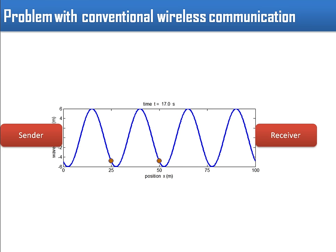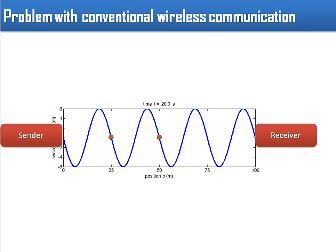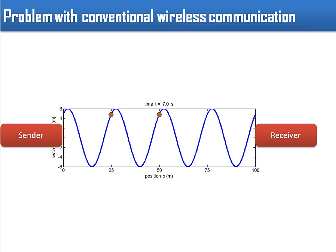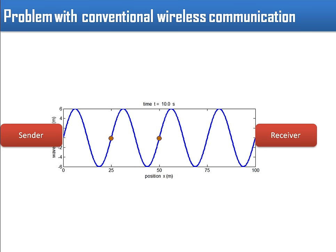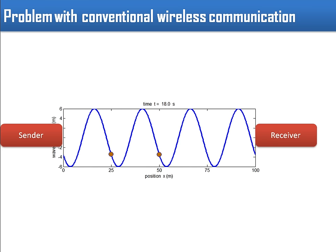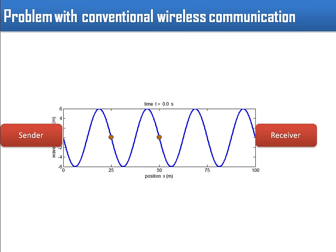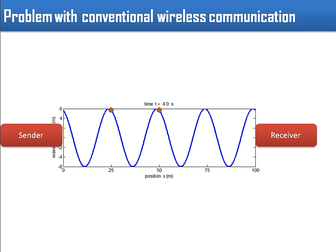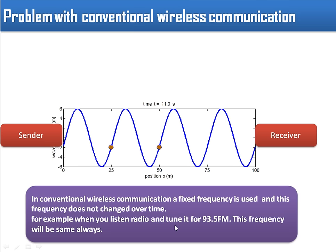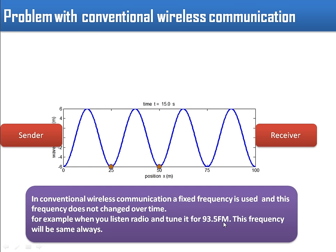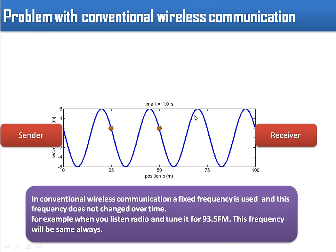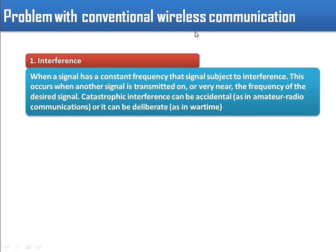The problem with single frequency transmission is that it's very easy to intercept. If a person is sending a signal on a particular frequency, another person only has to tune up his radio and try all the frequencies. When tuned to that particular frequency, that person will start receiving all the communication. For example, when we want to listen to radio, we know the frequency is 93.5, so we tune our radio to that frequency and our radio starts getting all the signals.